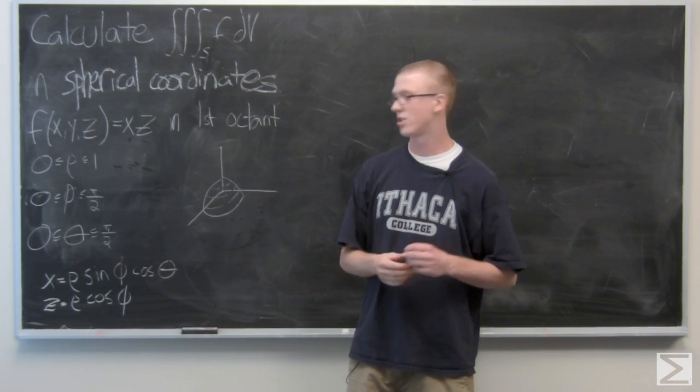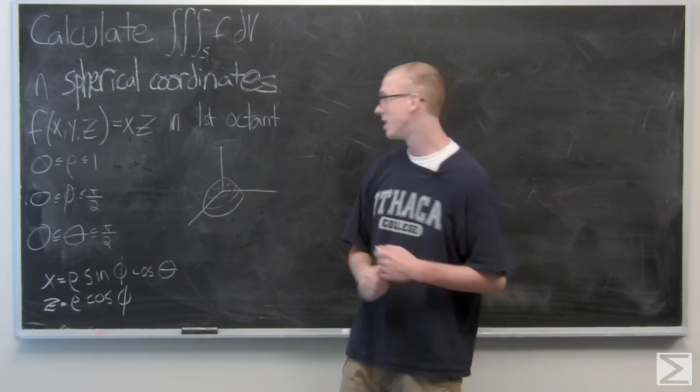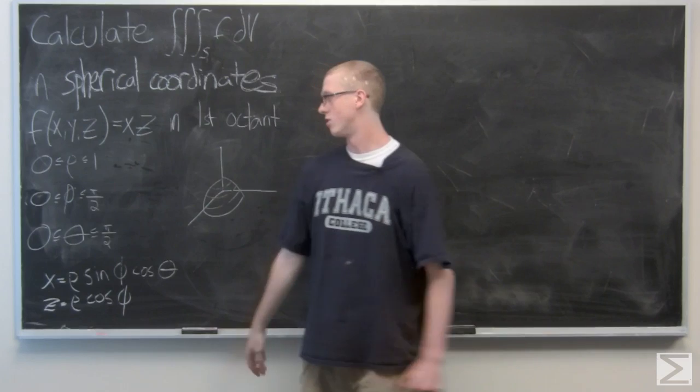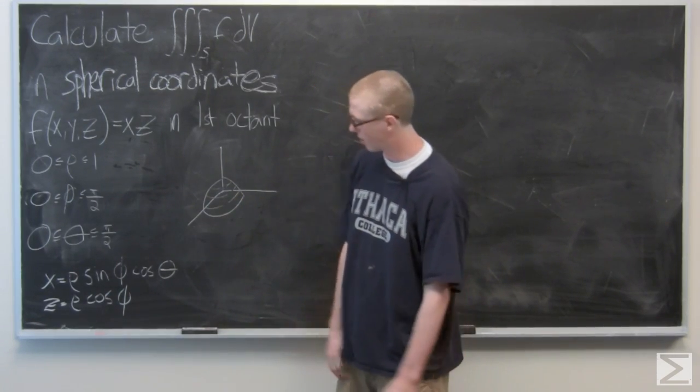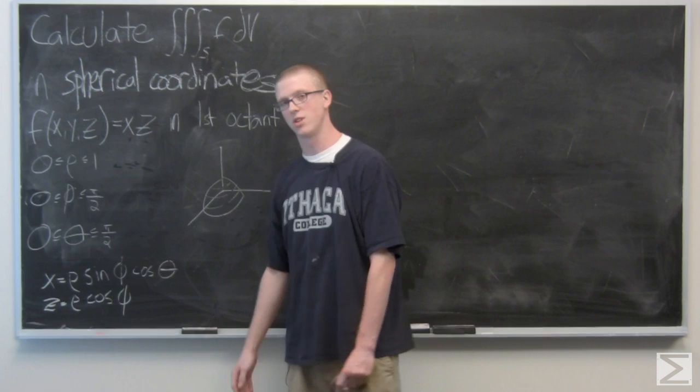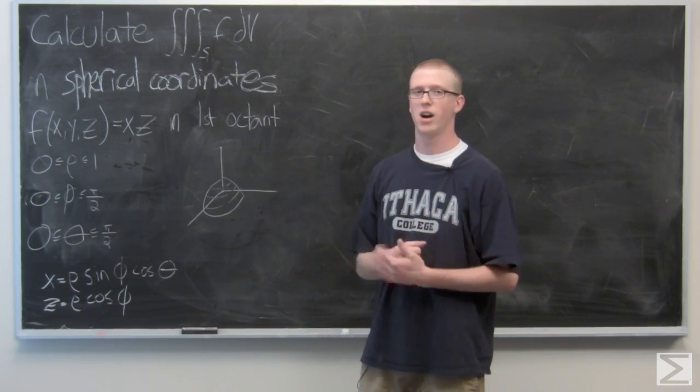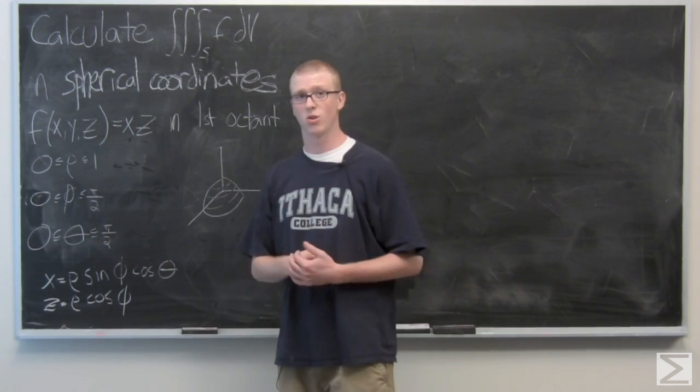Since we're given that it's in the first octant, we can actually set our bounds immediately. Rho goes from 0 to 1, phi goes from 0 to pi over 2, and theta goes from 0 to pi over 2. Now, our bounds are actually in spherical coordinates already.